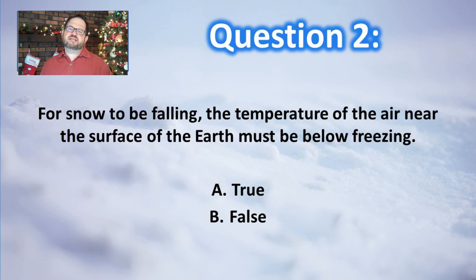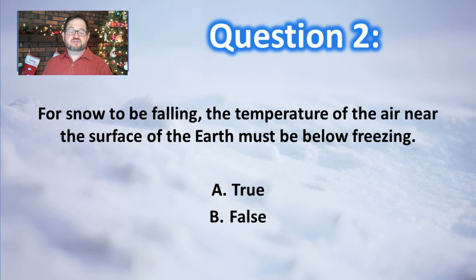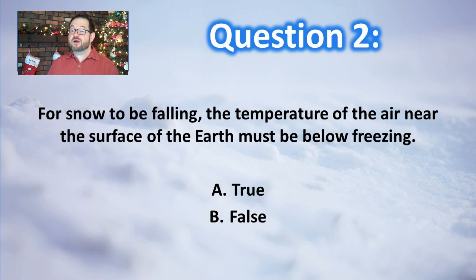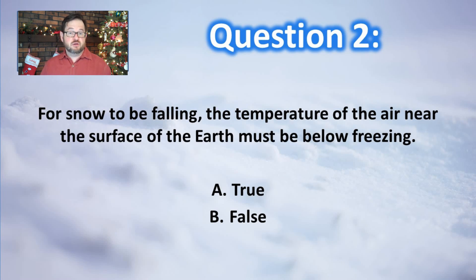Let's talk about what it takes for snow to fall. For snow to be falling, the temperature of the air near the surface of the earth must be below freezing. Is that true or false? Make a choice for those two options and get some feedback before we go on to question three.